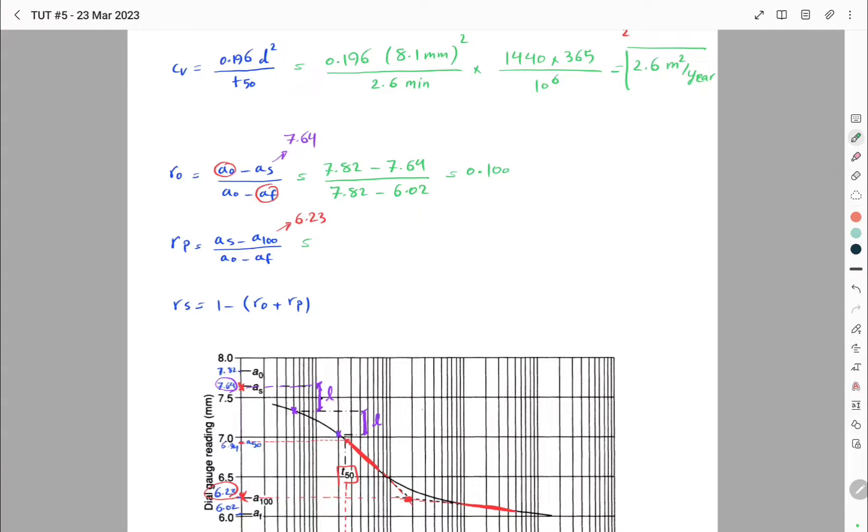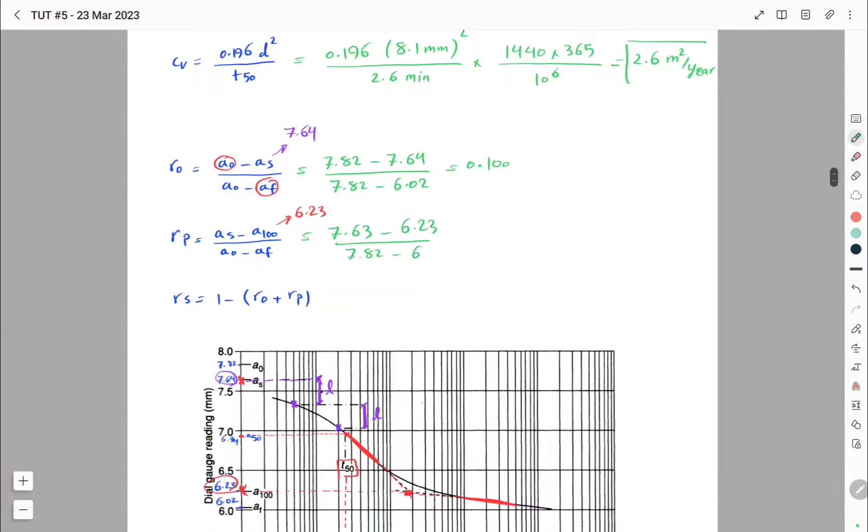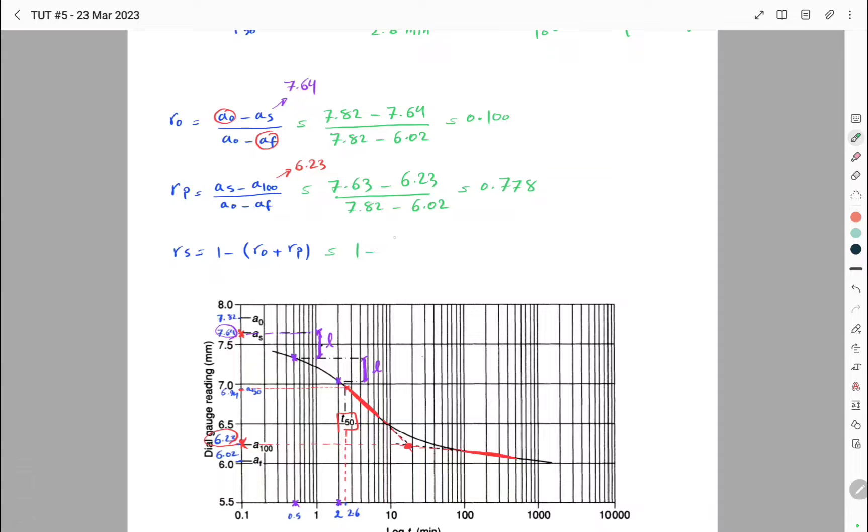For the second one, we have 7.63 minus 6.23 divided by 7.82 minus 6.02, which is 0.778. And finally, we have 1 minus this value, which gives us this.